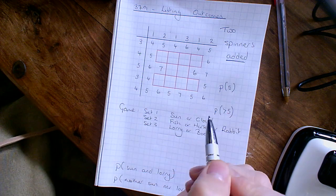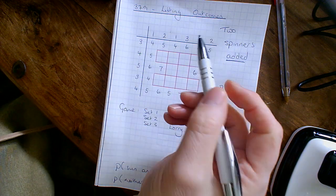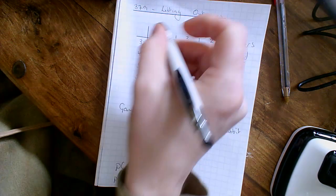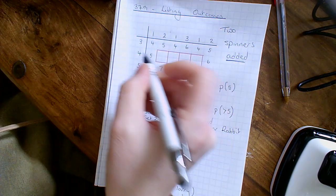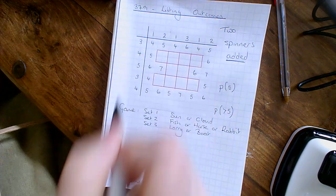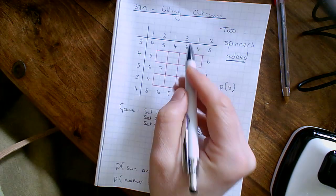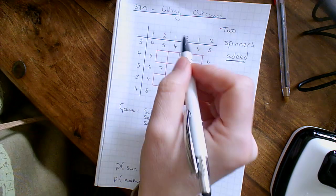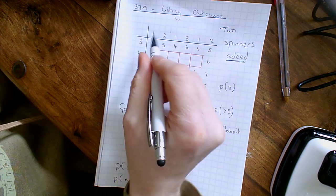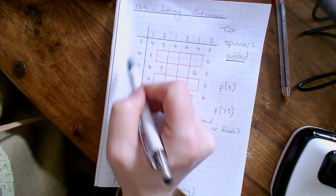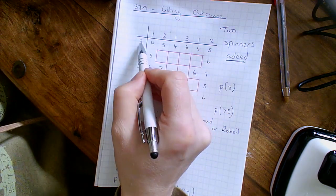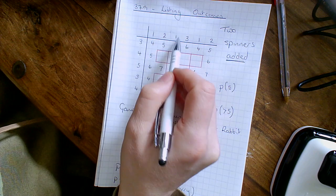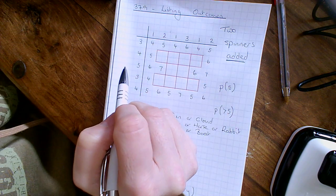Looking at the table, I've got spinner one at the top and spinner one at the side with some numbers. I need to be careful. Looking at what's already in it: spinner one got a one and spinner two was a three, so one and three was four; two and three was five, and so on. Fairly self-explanatory, keeping in mind it was added.